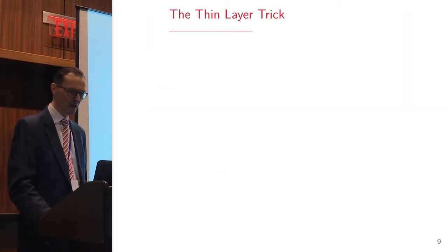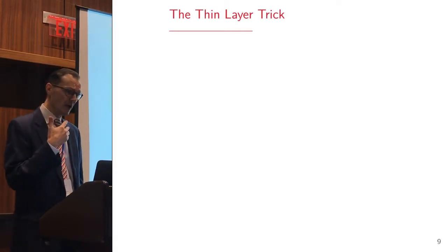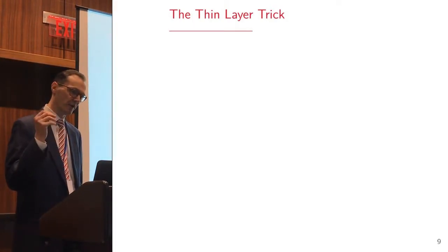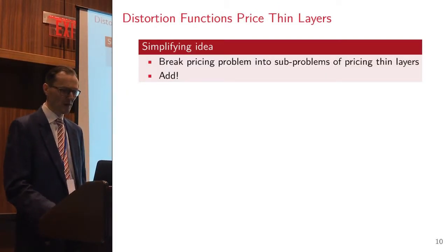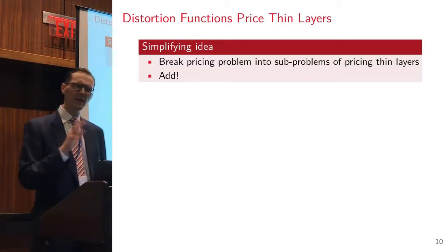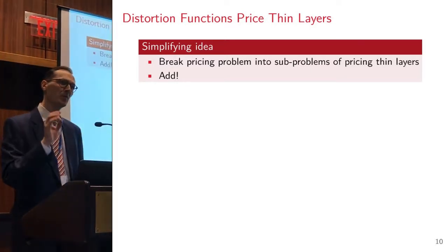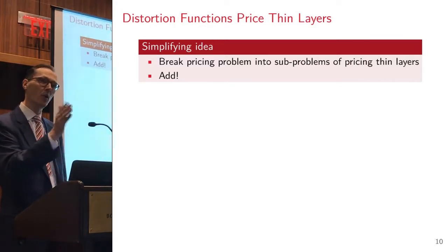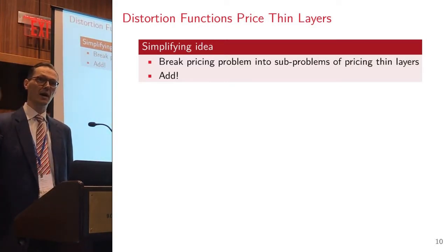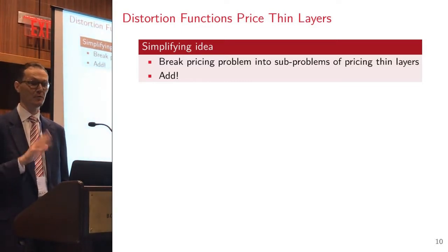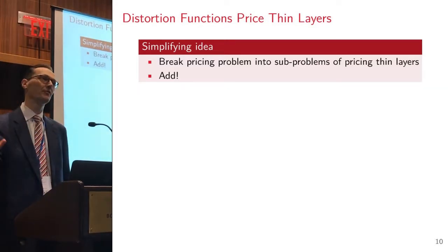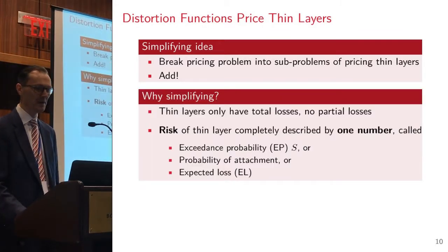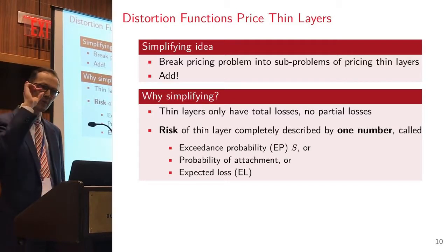I want to talk about using risk measures to determine pricing. There's a very helpful trick here that Kristen called the thin layer trick. Pricing a layer, even on something like a log normal, is a very hairy business. The simplifying idea is let's not try to bite off the whole python. Let's look at one spot and price one spot and then add up the prices of the bits.